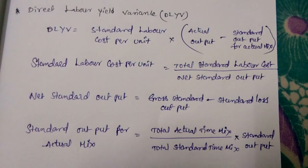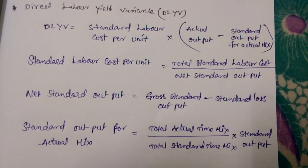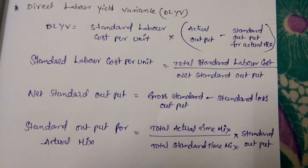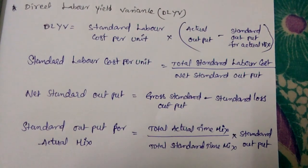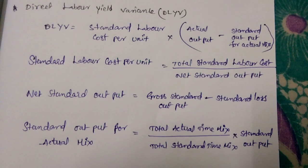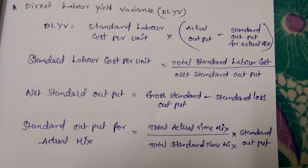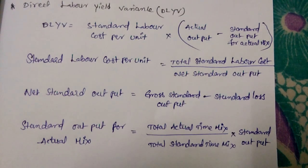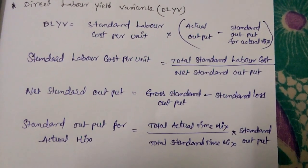Standard labor cost per unit equals total standard labor cost by net standard output. Net standard output equals gross standard output minus standard loss. Standard output for actual mix equals total actual time mix by total standard time mix into standard output.